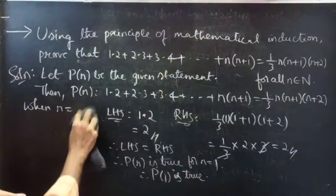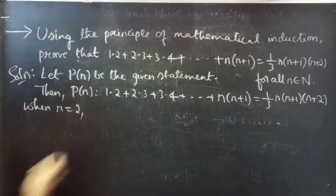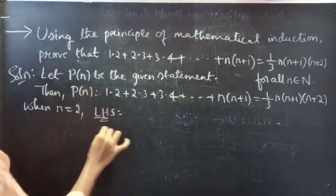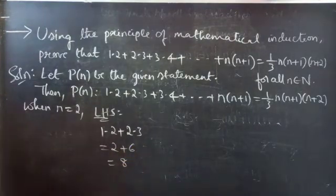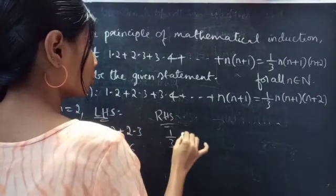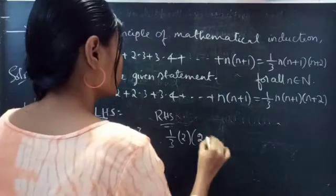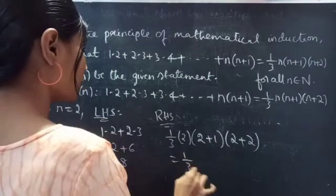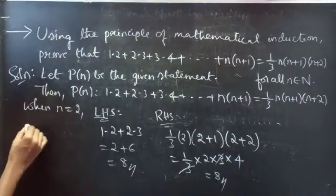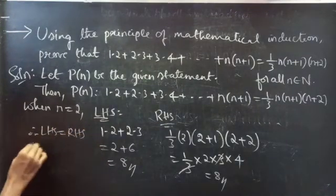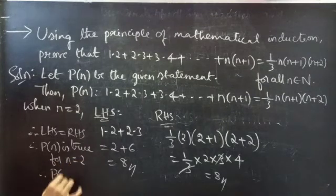We can also check for n=2. Take the first two terms in LHS: 1·2 + 2·3 = 2 + 6 = 8. For RHS, put n=2: (1/3)·2·(2+1)·(2+2) = (1/3)·2·3·4 — the 3 cancels — giving 2·4 = 8. So LHS equals RHS, therefore P(2) is true.